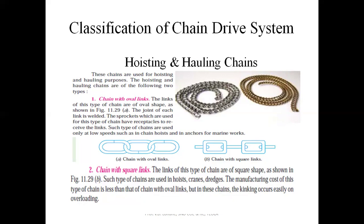Chains with square links have square cross-section and are used in hoists and cranes. Manufacturing cost of this chain is less compared to oval links, but kinking occurs when the load on this chain increases. This is the drawback of square links over oval links.